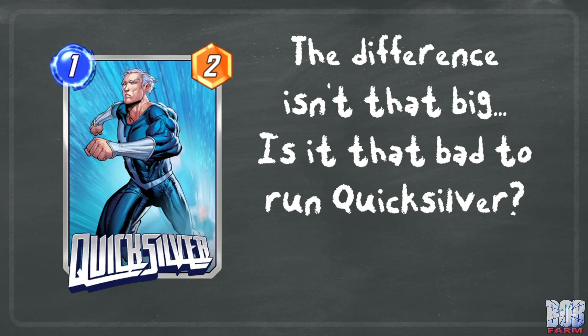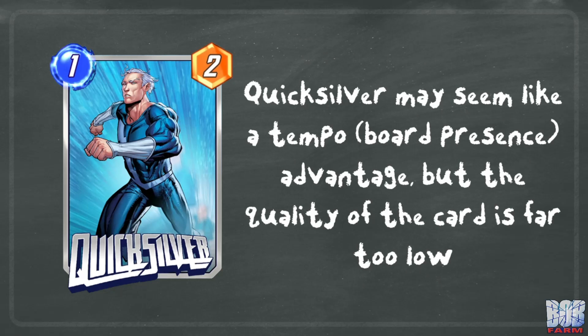The difference isn't that big, but is it really that bad to run Quicksilver? In my opinion, yes. Quicksilver may seem like a tempo or board presence advantage, but the quality of this card is far too low. Quicksilver can be Killmongered, provides no immediate bonuses due to its lack of effects, and has even less value than a card like Misty Knight who can be buffed by Patriot or the location Washington DC.